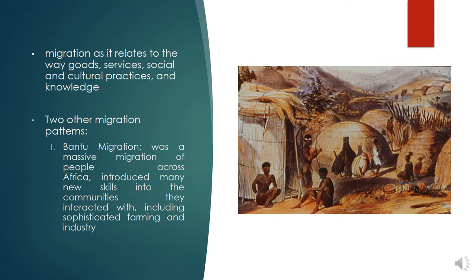Human movement, or migration, plays a key role in the cultural landscape of Africa. Geographers are especially interested in migration as it relates to the way goods, services, social and cultural practices, and knowledge are spread throughout the world. Two other migration patterns — the Bantu migration and the African slave trade — help define the cultural geography of the continent.